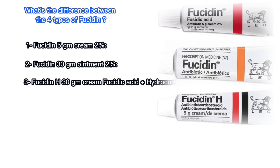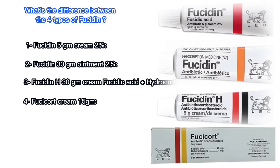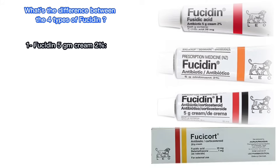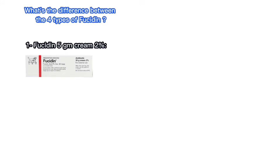What's the difference between the four types of Fucidin? One: Fucidin 5 gram cream two percent. Two: Fucidin 30 gram ointment two percent. Three: Fucidin H 30 gram cream — fusidic acid plus hydrocortisone. And number four: Fucicort cream 15 gram. Let's briefly discuss the difference between all four types of Fucidin.